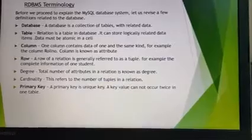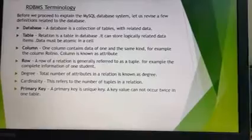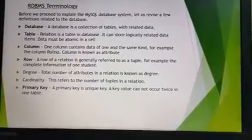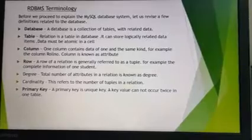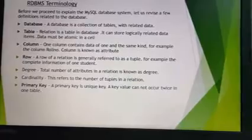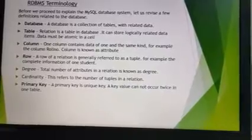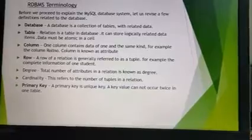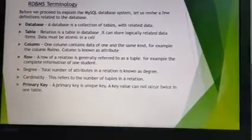A row is also called a tuple. A row of a relation is generally referred to as a tuple, or we can say a record. The complete information of one student indicates one record or one tuple. Degree means the total number of attributes in a relation. Cardinality refers to the number of tuples in a relation. Remember, in board exams this question is asked many times.